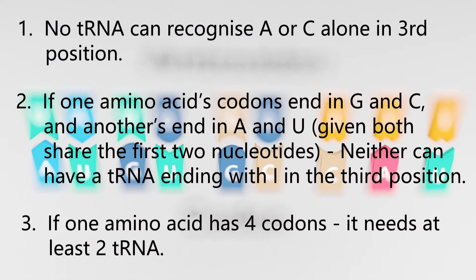And third, if one amino acid has four codons, there needs to be at least two tRNAs which carry it, as no base can recognize all four bases. To date, no tRNA anticodon has ever been found which challenges these assumptions.